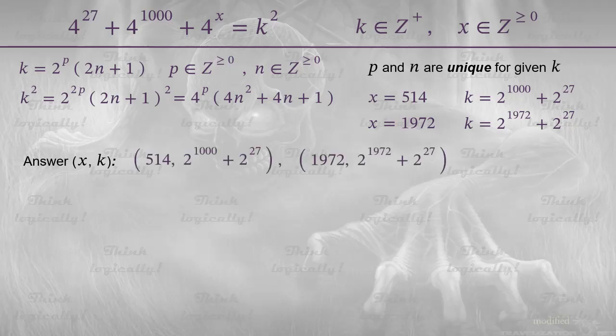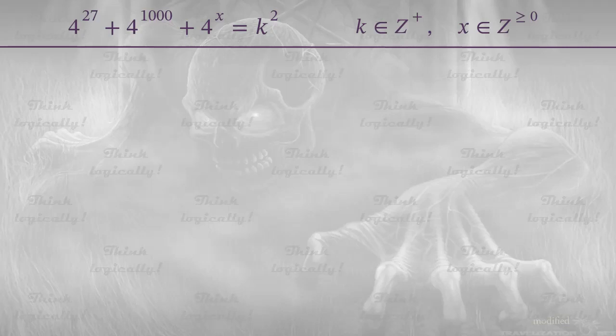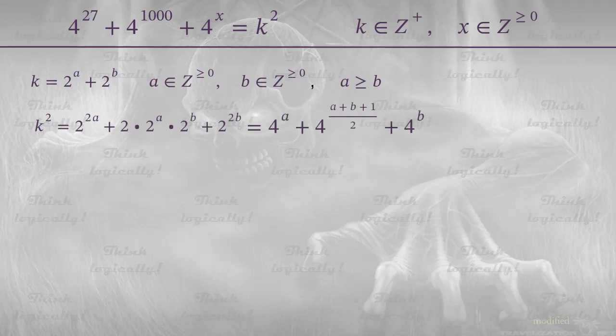Now looking at the result, I can suggest a much faster way of solving the problem. This time we assume k to be 2 to the power of a plus 2 to the power of b. Where a and b are non-negative integers and a is no less than b. Next, we write the expression for k squared and represent it as the sum of 3 powers of 4.